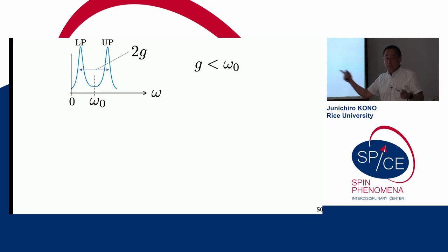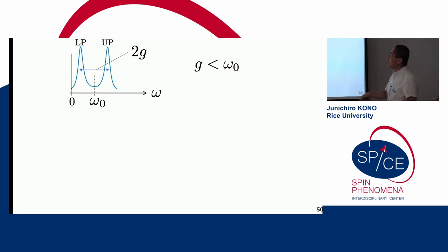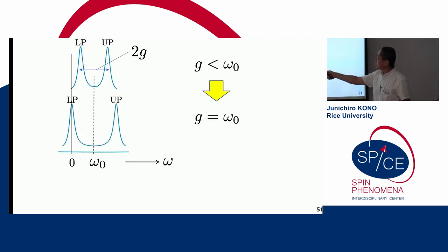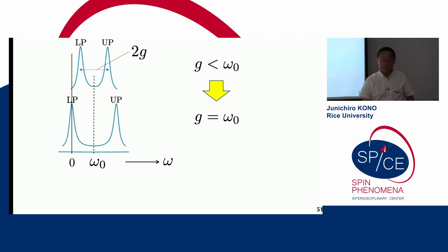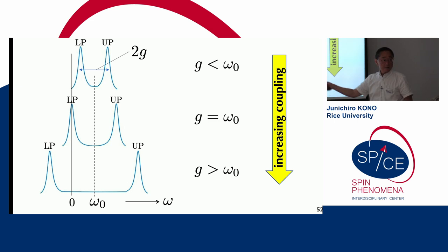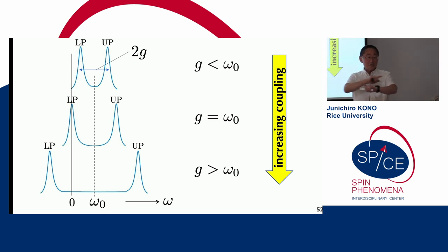Let me move on to the most interesting part: spin-magnon coupling. This is related to the so-called Dicke super-radiant phase transition. Within this simple theoretical description, the splitting between the lower and upper polariton is 2G. As we increase G, when the coupling constant equals the bare frequency omega-zero, the lower polariton energy becomes zero — it's G minus omega-zero. And as we keep increasing the coupling constant, the energy of the lower polariton becomes negative, which means this simple model breaks down and there is some instability in the system.